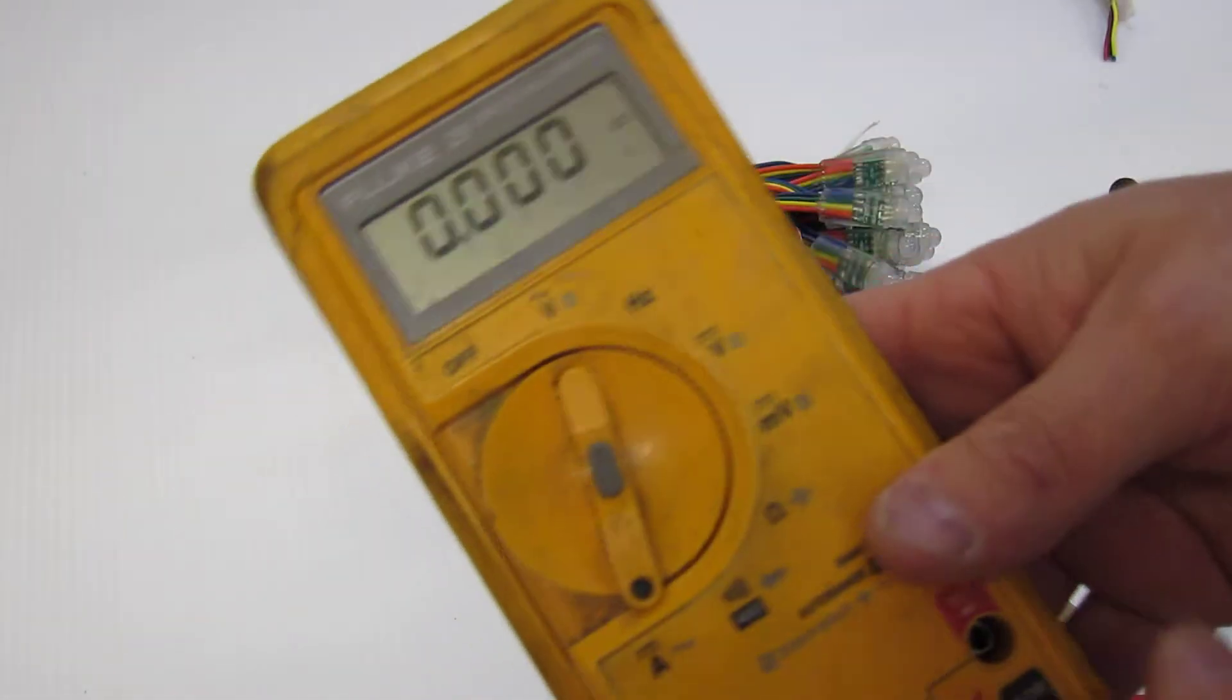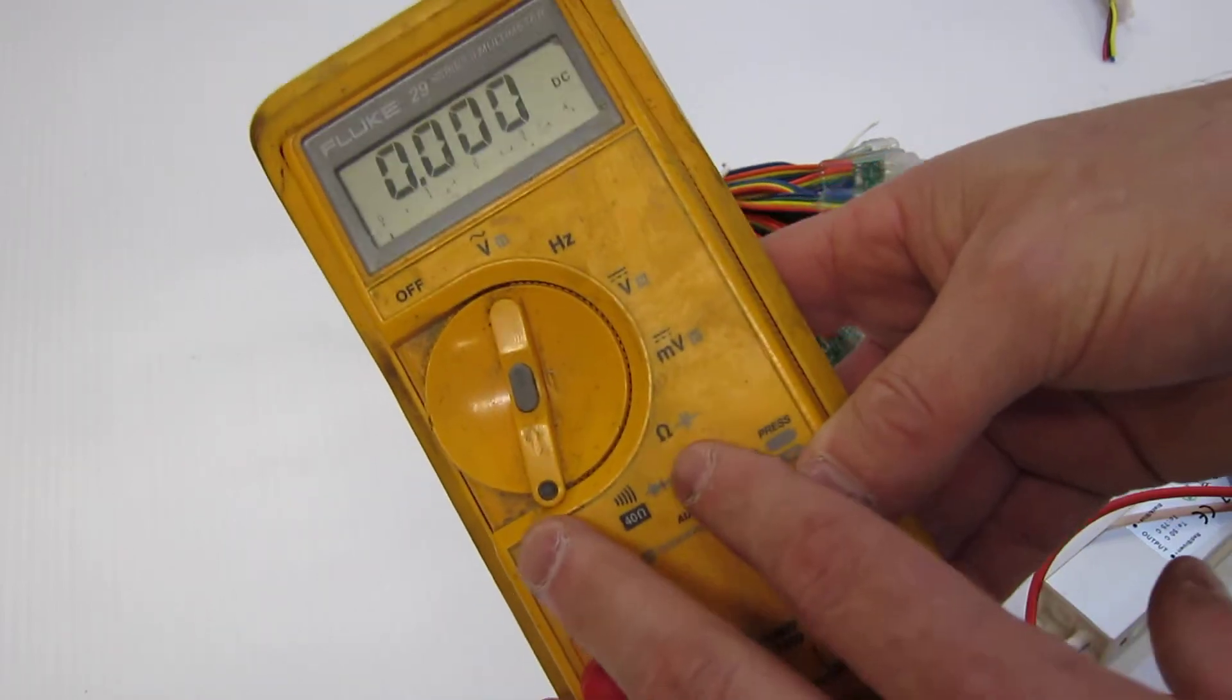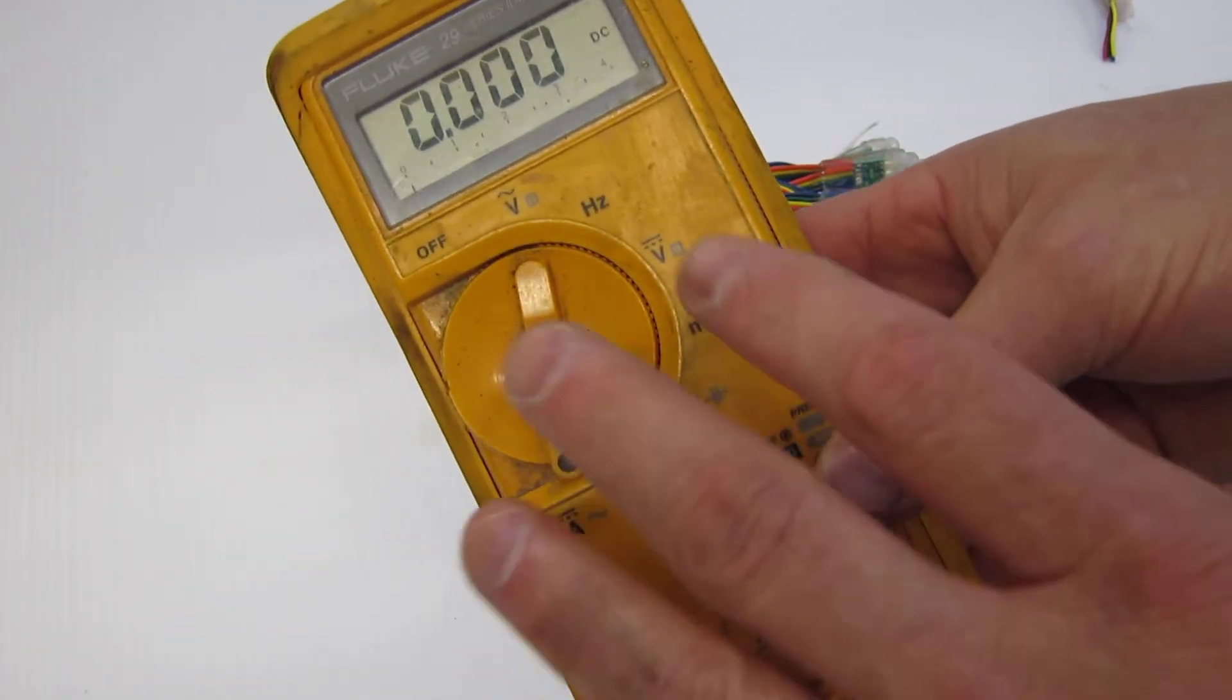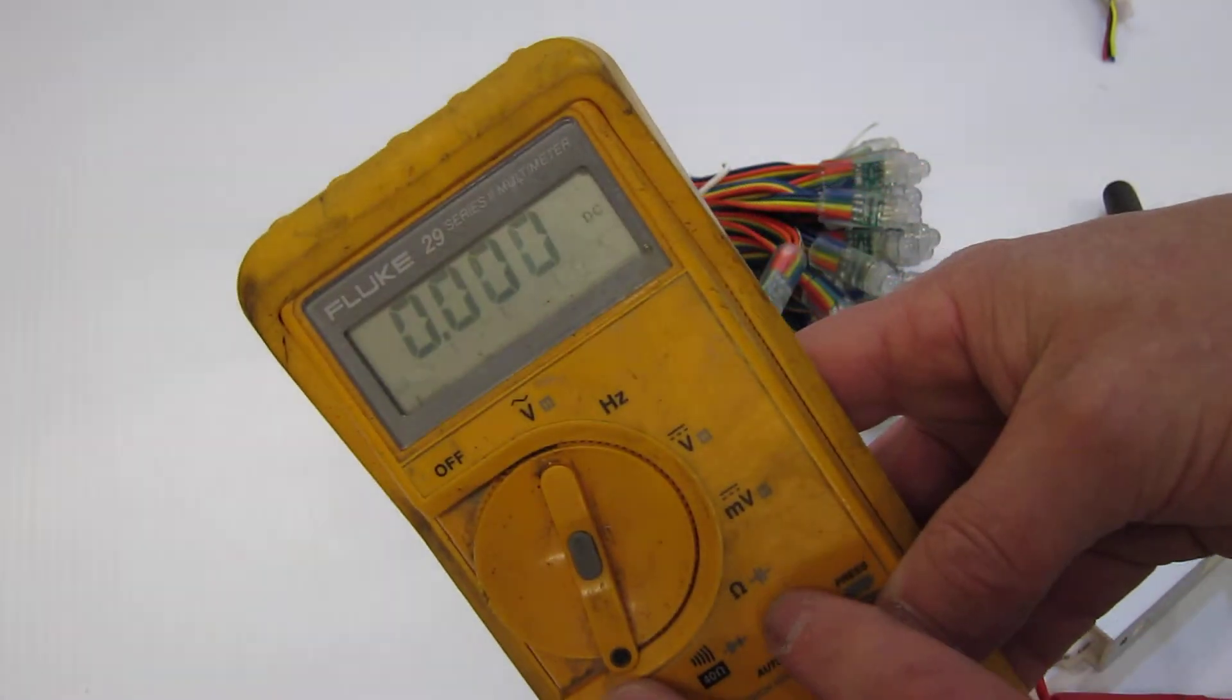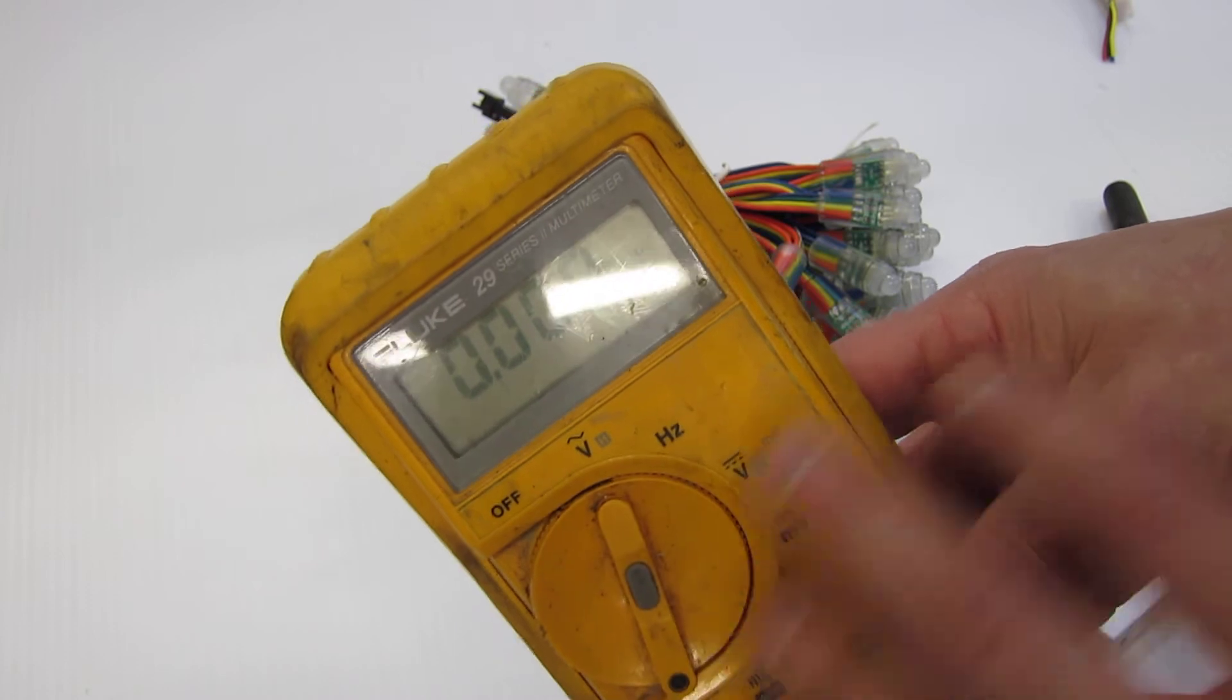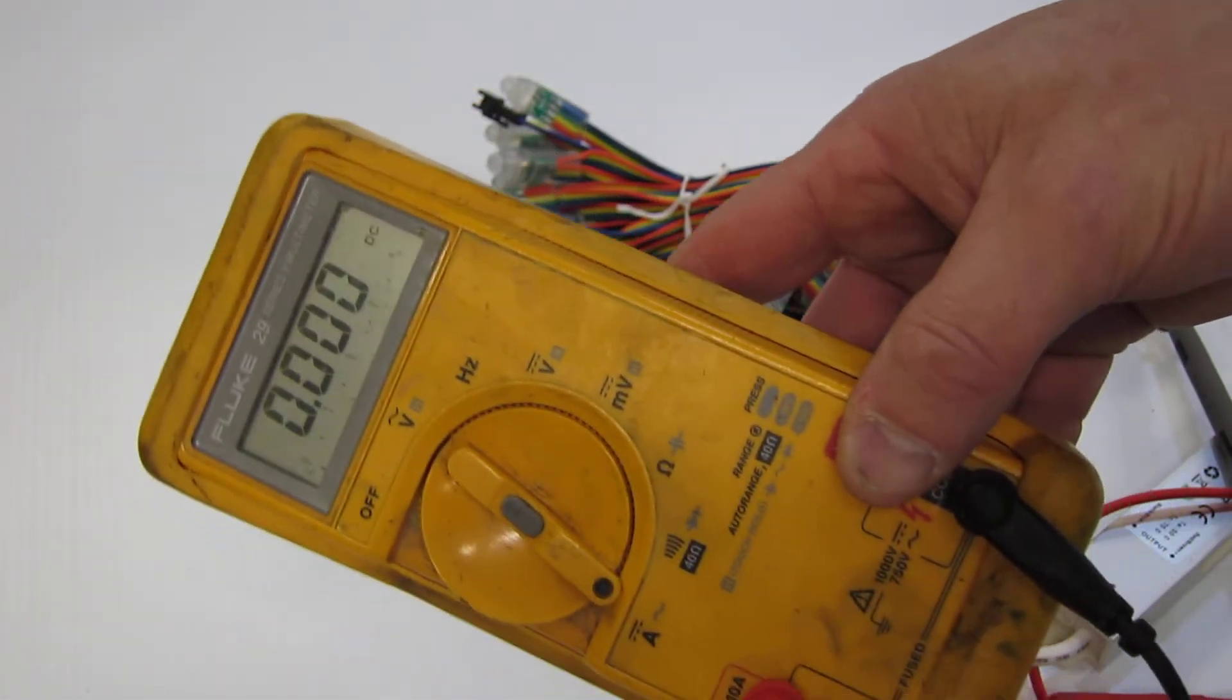The first thing I need to do is get a meter. This is a very nice Fluke meter. These are fairly expensive, but you can buy an inexpensive, reasonably good meter for $15 to $25. Look on the internet, or you can even buy them at auto parts stores, Walmart, most common places like that, including Radio Shack.